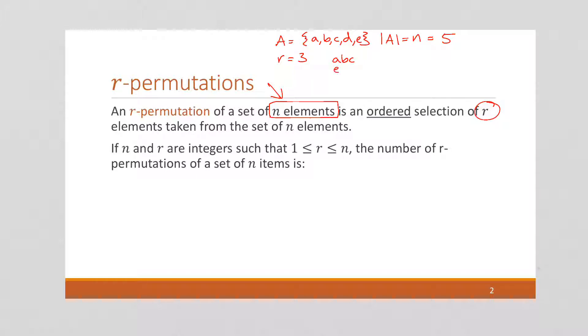E, D, A is another ordering, C, A, E is a third ordering, and so on. So we want to know how many orderings are there of 3 elements out of this larger set.